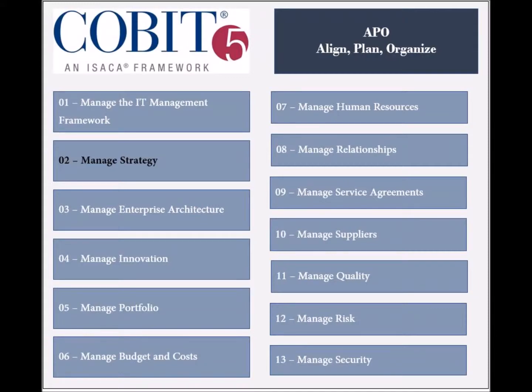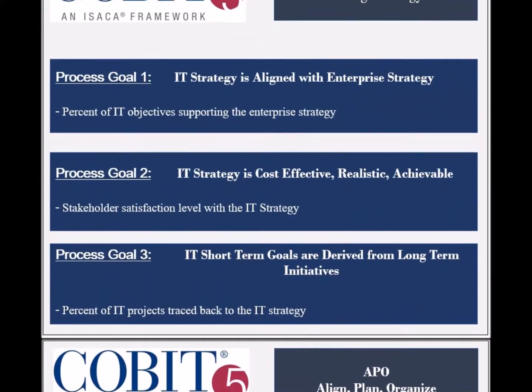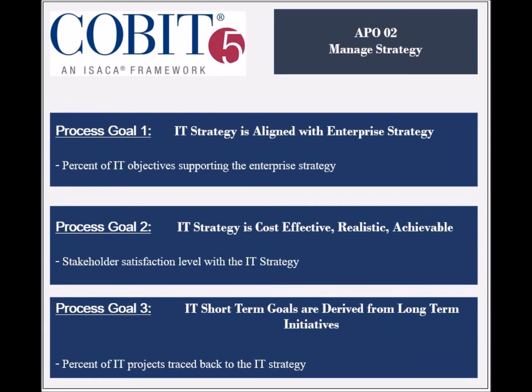The second process of the Align, Plan and Organize Domain, called Manage Strategy, has five process goals. The first goal this process supports is to ensure that IT strategy is aligned with the enterprise strategy, and its achievement is measured by the percent of IT objectives that support the enterprise strategy.